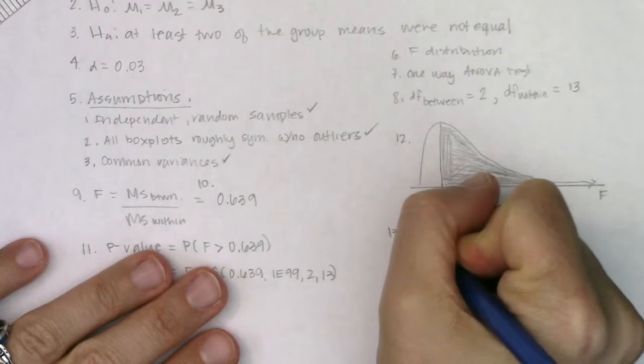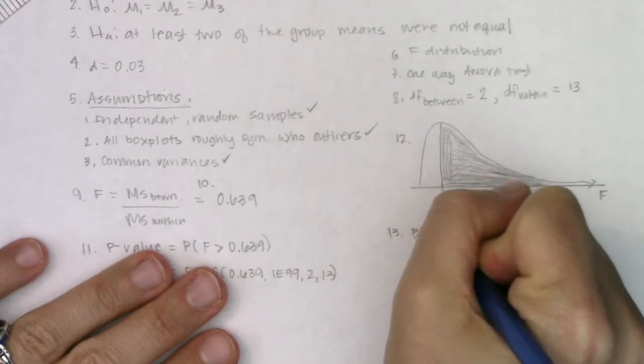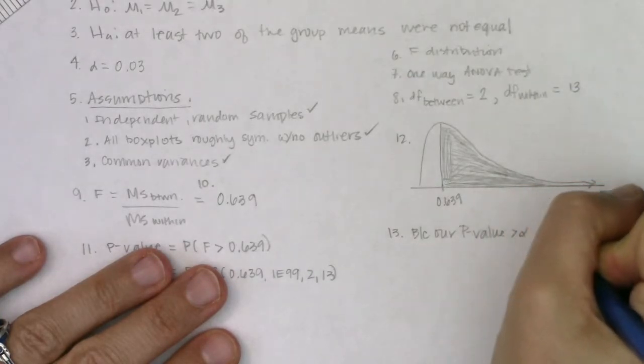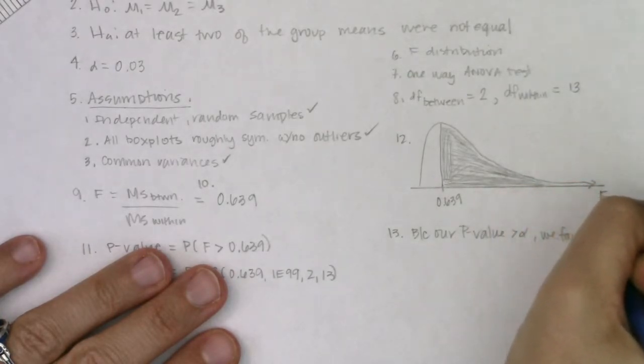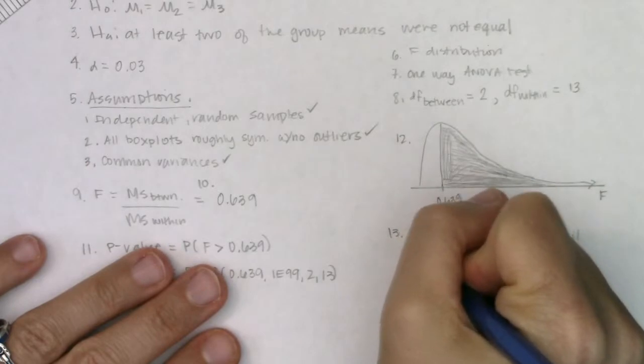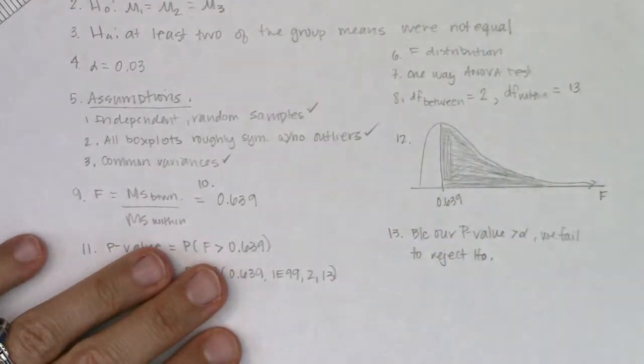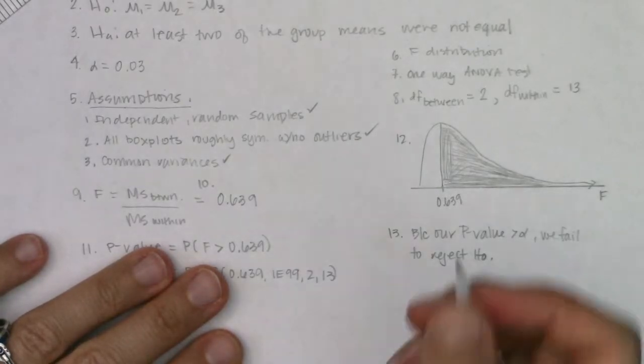Step 13. What are we going to do? We're going to fail to reject. Because our p-value is greater than alpha, we fail to reject H naught. So again, we potentially made a type 2 error. And we would say our data was not statistically significant.